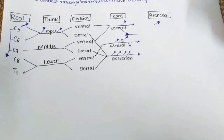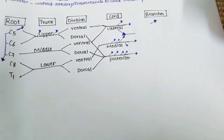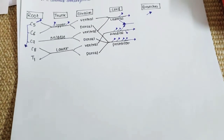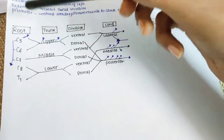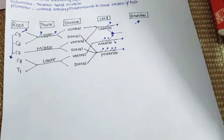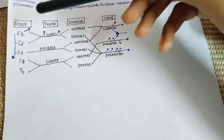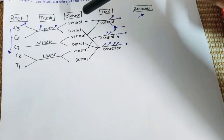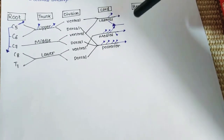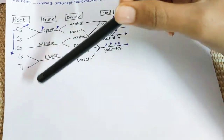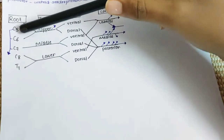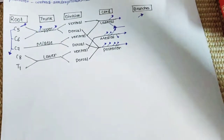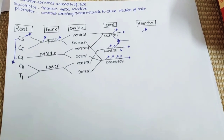Welcome back to our channel. Today we are going to start the brachial plexus using a simple diagram. The brachial plexus has roots, trunks, divisions, cords, and branches. Think of a tree in a garden — first you have the root, then the trunk, then the divisions, then the cord and the branches. The roots are mainly from C5 to T1: C5, C6, C7, C8, T1.